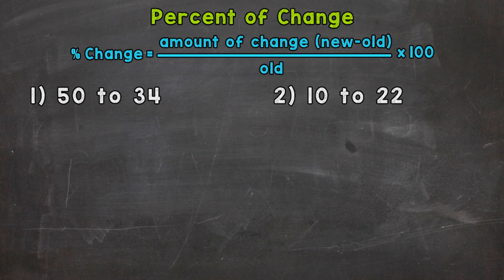Now when we calculate percent of change, we take the amount of change, so the new number minus the old number, and divide by the old number. We then multiply that by 100 to convert that to a percent.